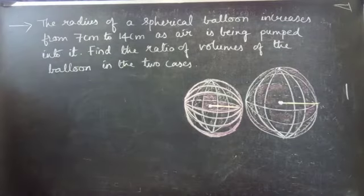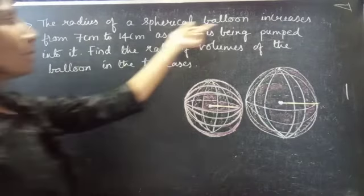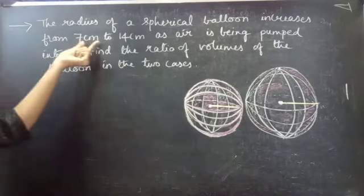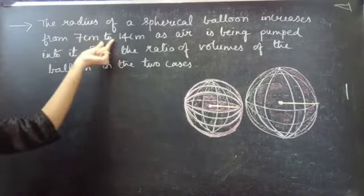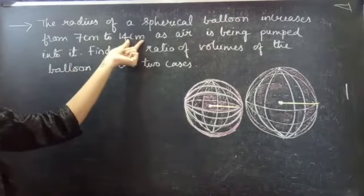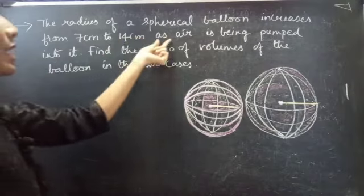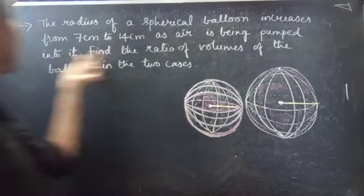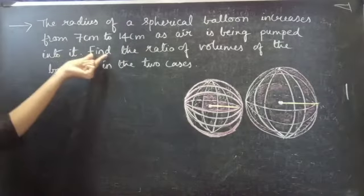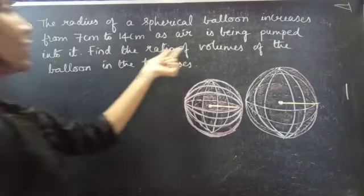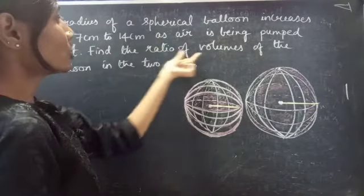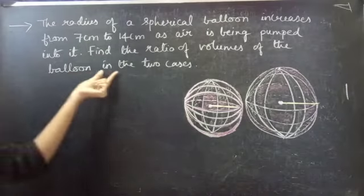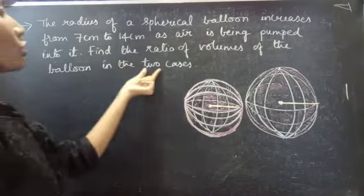Problem: The radius of a spherical balloon increases from 7 cm to 14 cm as air is being pumped into it. Find the ratio of volumes of the balloon in the two cases.